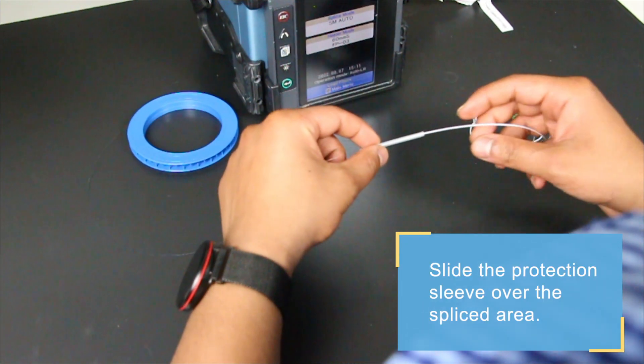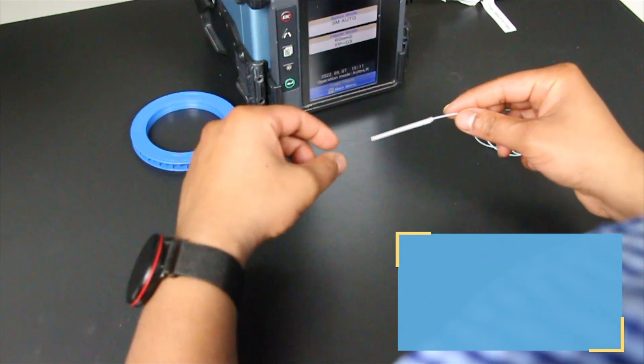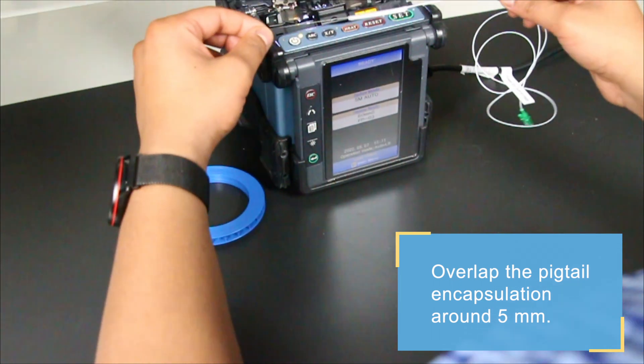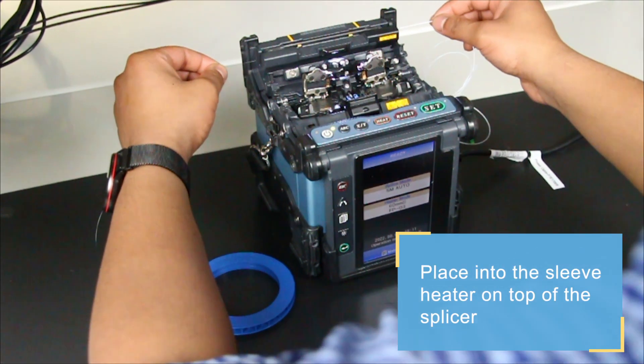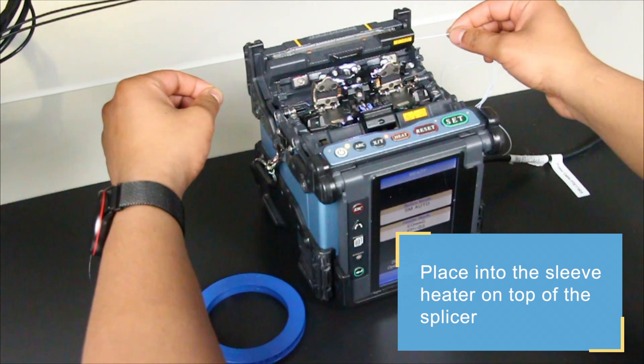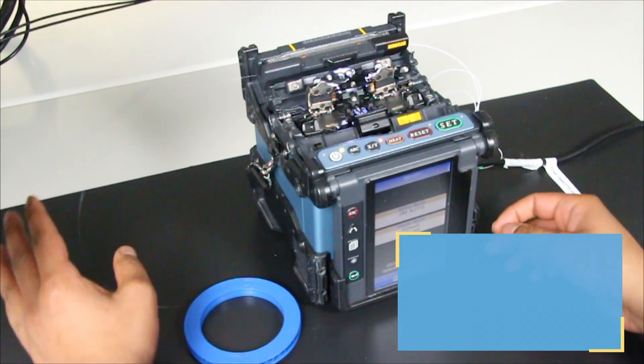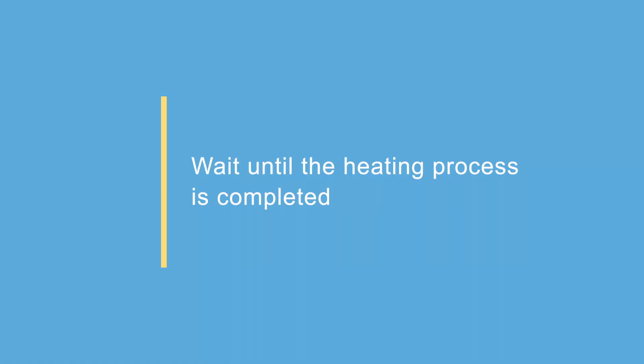Slide the splice protection sleeve over the spliced area. Seal the splice protection sleeve by heating it up. To do so, place the splice-protected fiber in the sleeve heater located on top of the splicer. The heating will start automatically. Just wait until the process is finished.